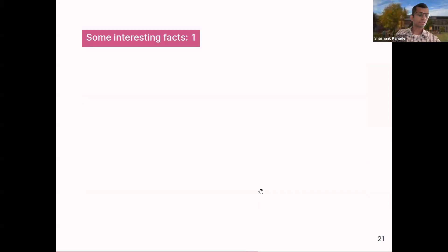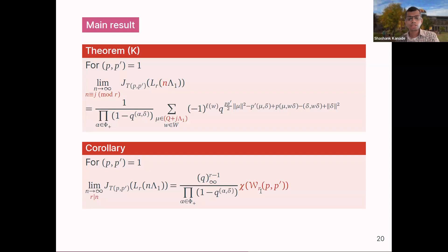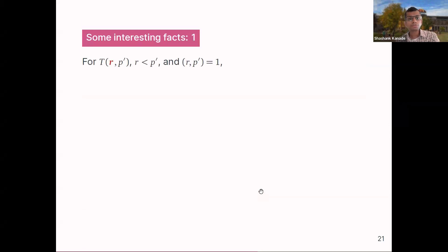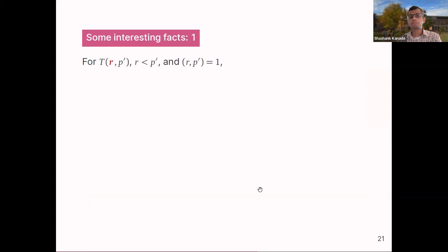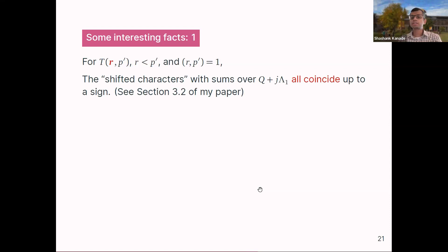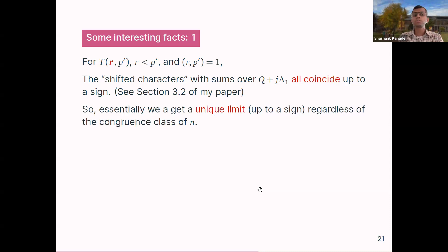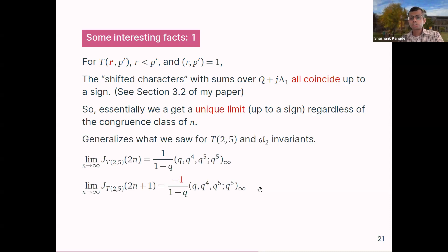Some interesting facts. First: if you take P equal to r — so for SL(r) you look at torus knots T(r, P') — then all of the shifted characters coincide up to a sign, just as in the SL(2) case for T(2,5) where the limits along odd and even weights agreed up to sign. So essentially you get a unique limit regardless of which coset you go through, as long as P = r.